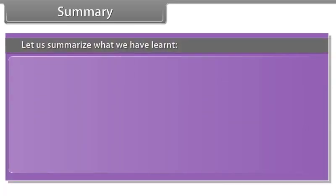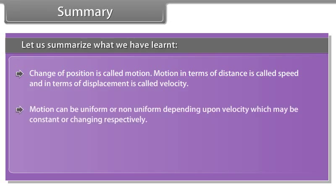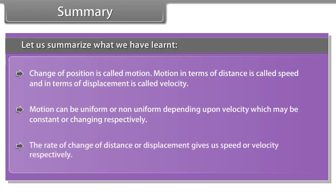Summary: Change of position is called motion. Motion in terms of distance is called speed, and in terms of displacement is called velocity. Motion can be uniform or non-uniform depending upon velocity, which may be constant or changing respectively. The rate of change of distance or displacement gives us speed or velocity respectively.